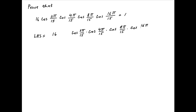Now multiply and divide this expression by sine of 2π upon 15. Notice that in the numerator, the expression in the brackets — which is 2 times sine of 2π upon 15 times cos of 2π upon 15 — is equal to sine of 4π upon 15.